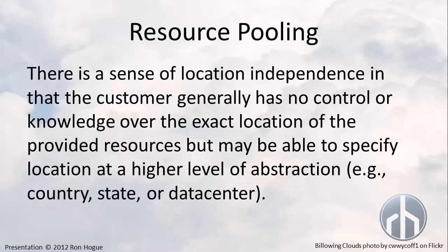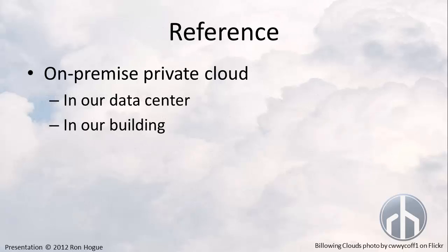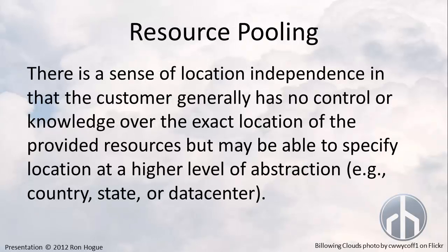The second part of resource pooling says there's a sense of location independence, in that the customer generally has no control or knowledge over the exact location of the provided resources, but may be able to specify a location at a higher level of abstraction — like a certain country, state, or data center. This is where the conflict begins with private cloud versus public cloud. In the case of a private cloud, you do have exact knowledge of the exact location of your resources — you know what server room, what rack, and what server is running your virtual machine at any given point. So in this last part of resource pooling, we see a direct conflict with what we understand as a private cloud.